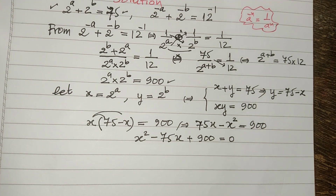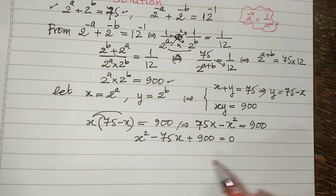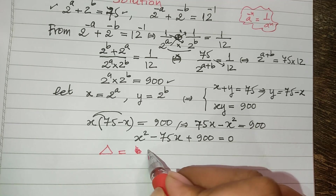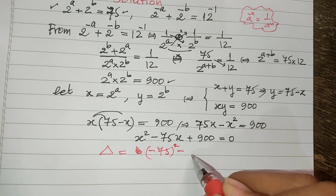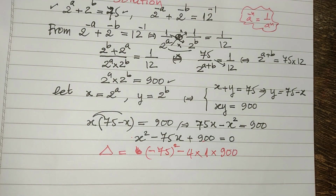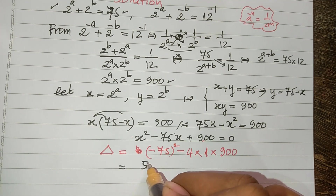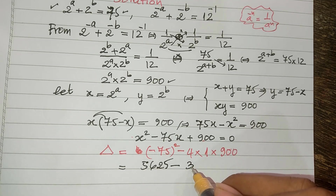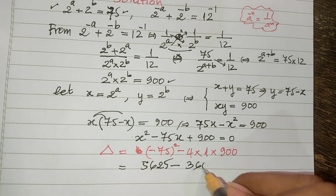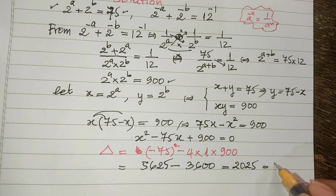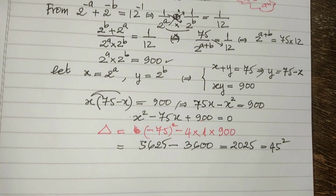Now we have a quadratic equation in one variable. To solve this equation we use the discriminant: delta equals b squared minus 4ac, where b equals negative 75. So delta equals 75 squared minus 4 times 1 times 900, which equals 5625 minus 3600, which equals 2025.